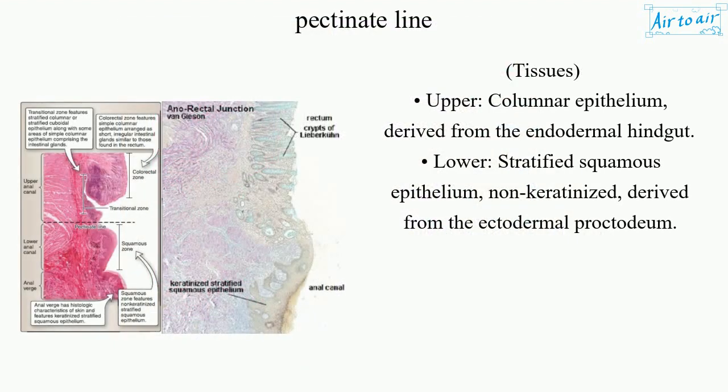Tissues: Upper — columnar epithelium, derived from the endodermal hindgut. Lower — stratified squamous epithelium, non-keratinized, derived from the ectodermal proctodeum.